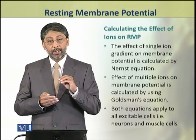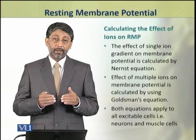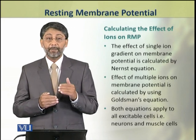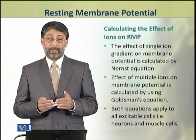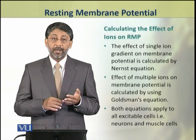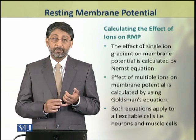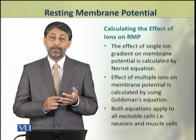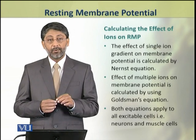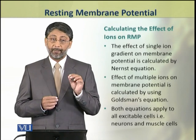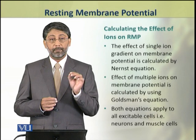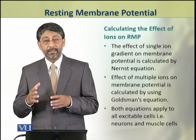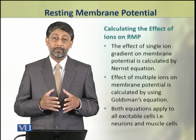Now we shall discuss the equations which we can use to calculate the effect of a single ion. To calculate the effect of a single ion on generating resting membrane potential, we use an equation called the Nernst equation. While to calculate the effect of multiple ions on membrane potential, we use Goldman's equation. Both these equations apply equally to all excitable cells, that is, neurons and muscle cells.